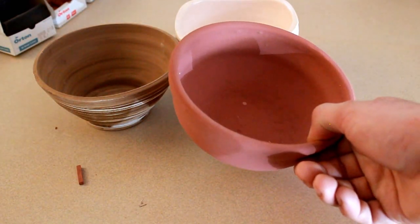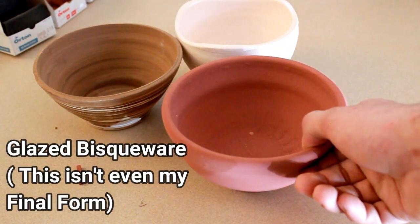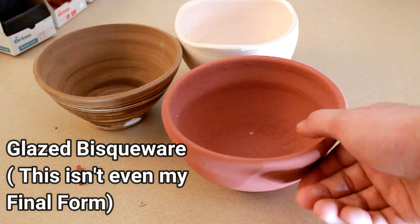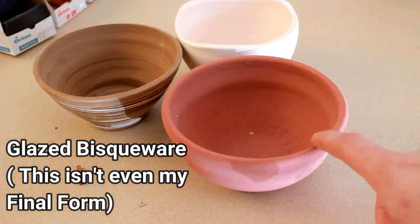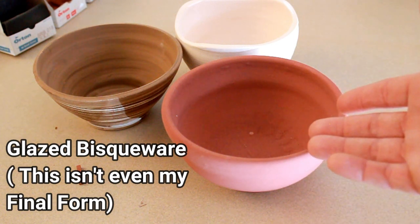Once you put glaze on it, it's going to look a little bit like this. And once you make sure the bottom is nice and clean, you can then put it back inside the kiln at whatever cone your teacher or you want to put it back into. So for example, I put mine in at cone 6.